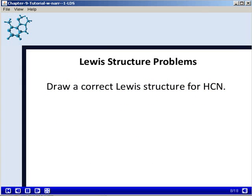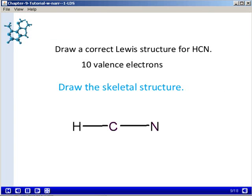The next one is to draw a Lewis structure for HCN. And so if you correctly total up the number of valence electrons, you end up with 10 valence electrons total.